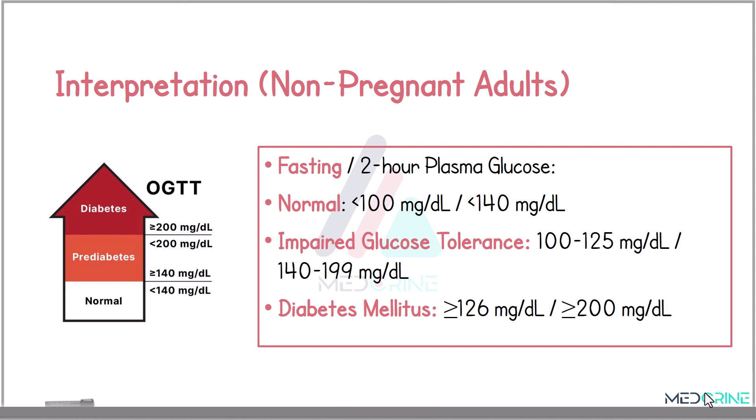To diagnose a patient with impaired glucose tolerance, they need to have a 2-hour oral glucose tolerance blood sugar that is greater than or equal to 140 mg/dL and less than 200 mg/dL. If findings are 200 mg/dL or more, then we can diagnose the patient with diabetes mellitus.